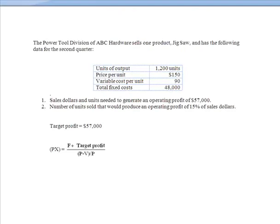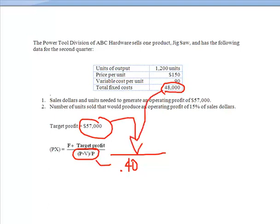Because we've already calculated this, we knew that this was 0.40 or 40%. So my target profit, $57,000, plus my total fixed costs, right here, divided by 0.40 is going to give me the units needed.